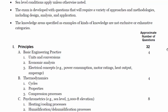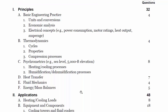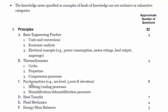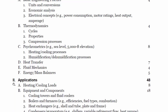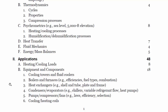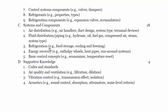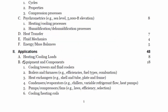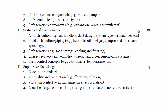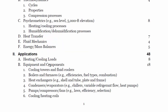It used to be 40 breadth, 40 depth. Now it's 32 in what they're calling principles and 48 applications. Within principles they have basic engineering practice, thermodynamics, psychrometrics, heat transfer, fluid mechanics, and energy and mass balances. And then within applications, there's heating and cooling loads, equipment and components, systems and components, and supportive knowledge. Equipment and components is 18 problems and systems and components is another 18 — so that's almost half the test, and this really is the core of HVAC and refrigeration.